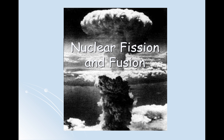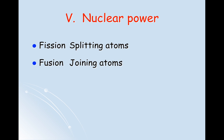Hi guys, tonight we're going to learn about nuclear fission and fusion. Prior to watching this flip lesson, make sure that you guys read 25.4 in your textbook to give you a little prior background information. We're going to call this Roman numeral five, nuclear power. Everything that's written in red in the PowerPoint will go down as your notes for your flip lesson. Feel free to pause the video at any time if I go a little too fast to make sure that you get all the notes.